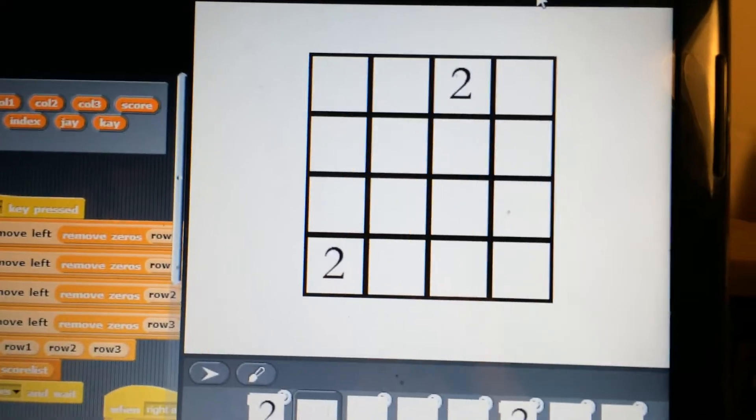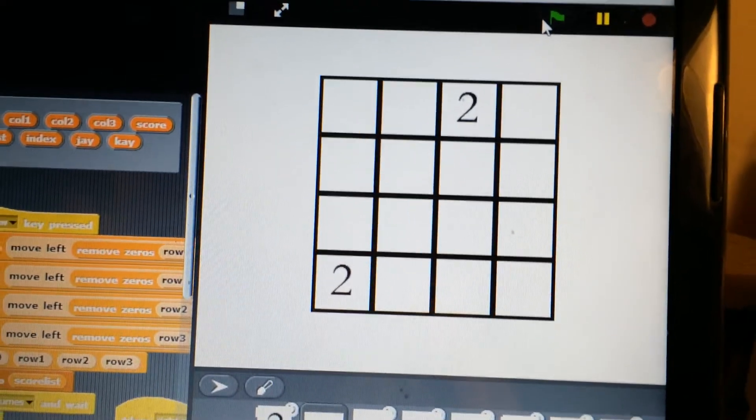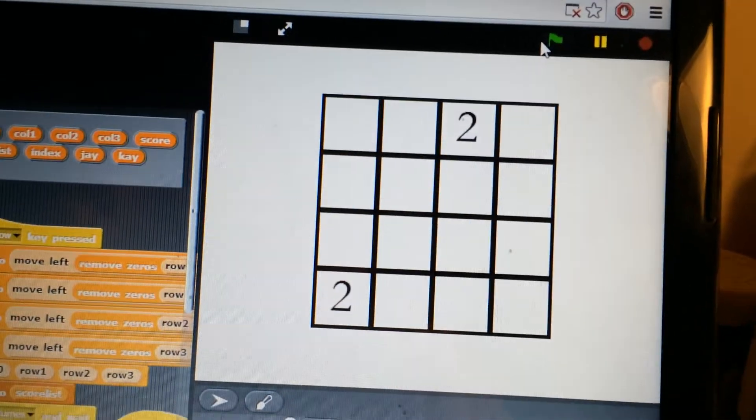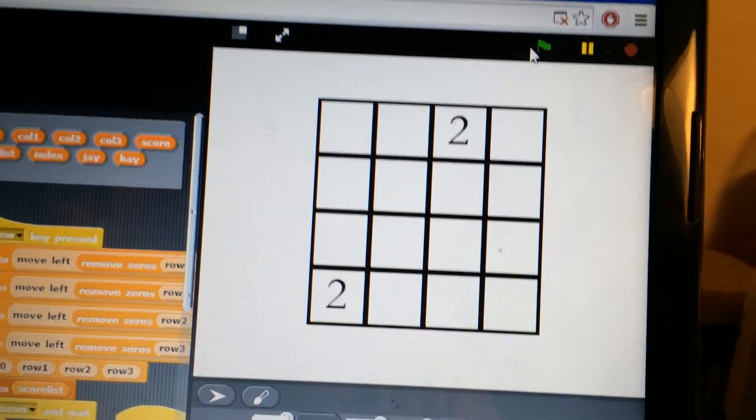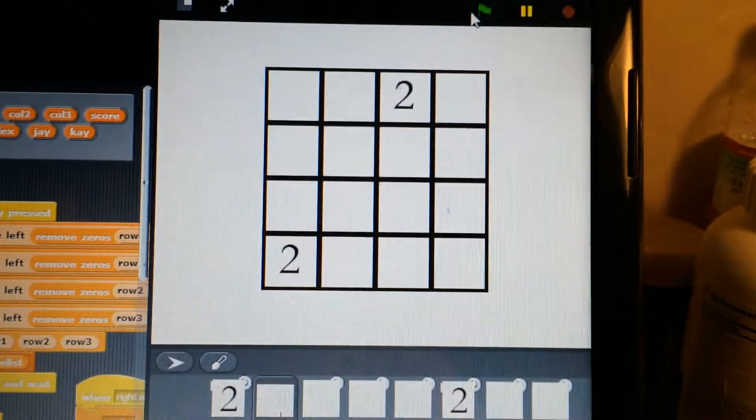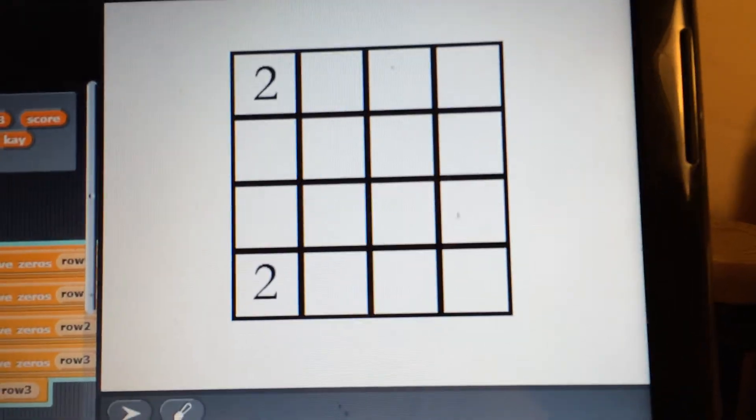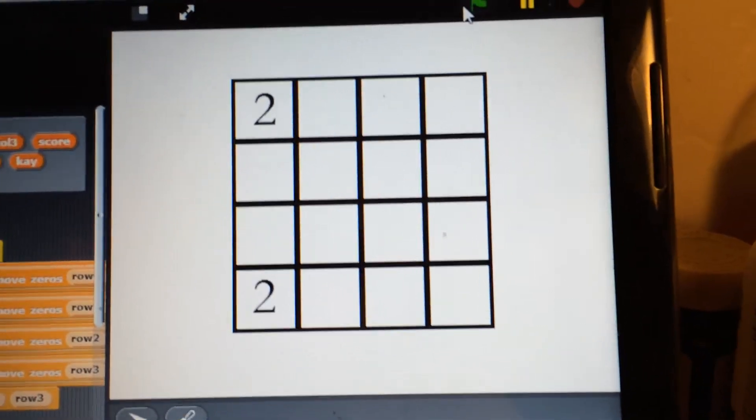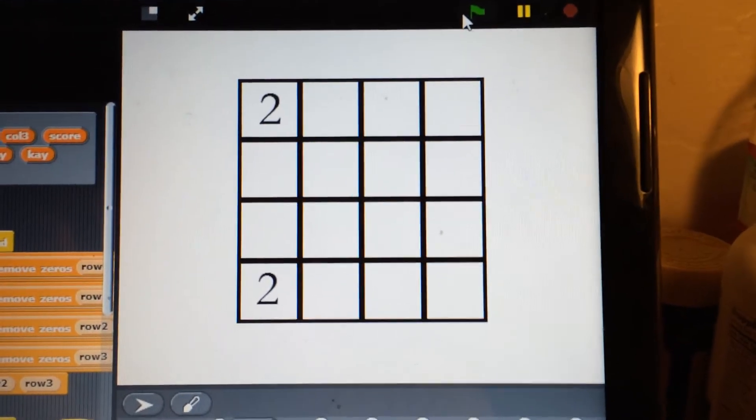After the twos have been generated, the game player has the option of moving up, right, or down. Let's say I want to move left. Move left moves the two to the most left side.